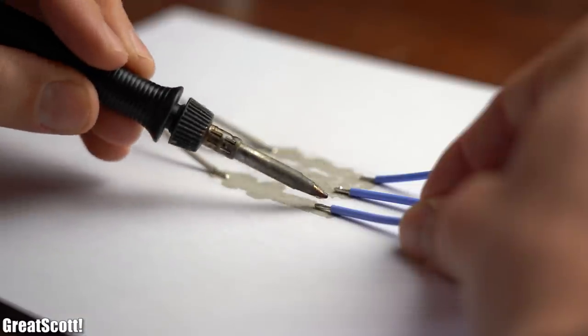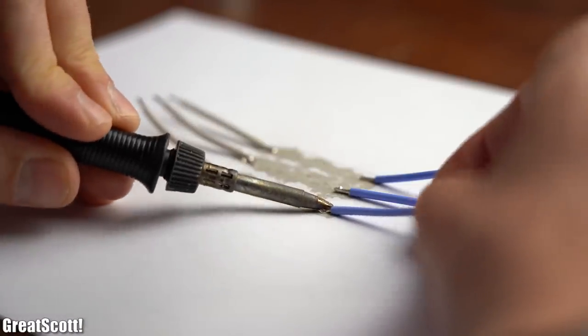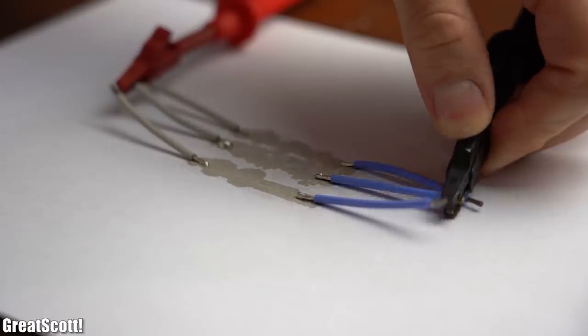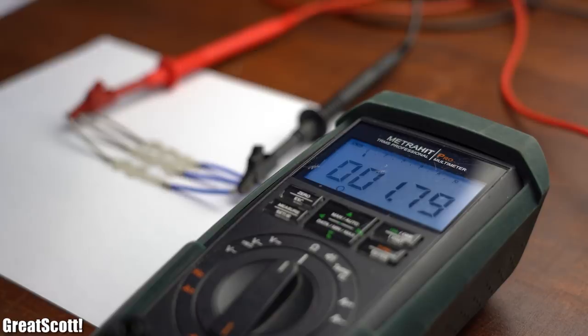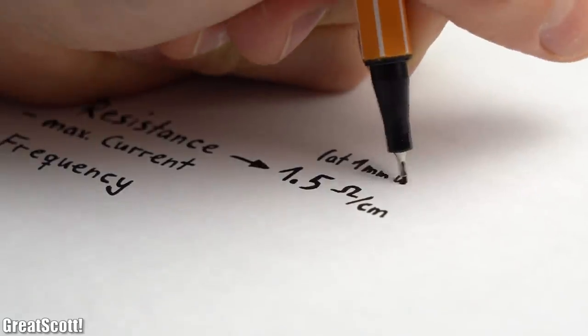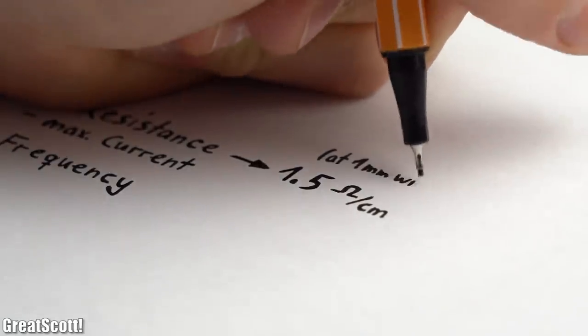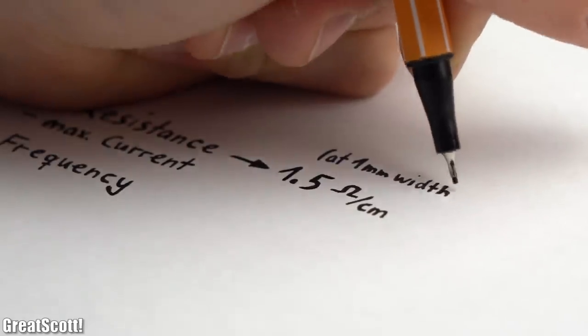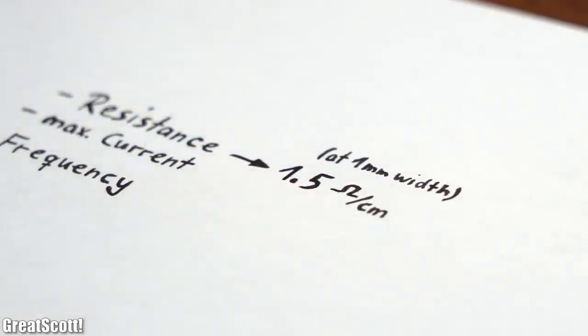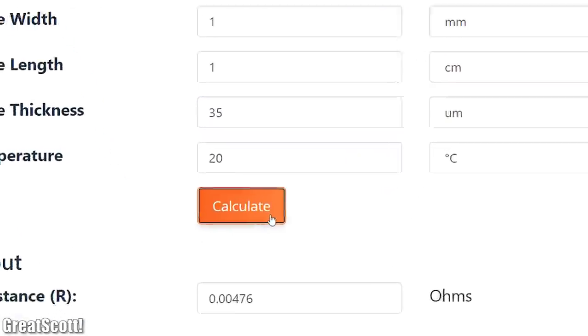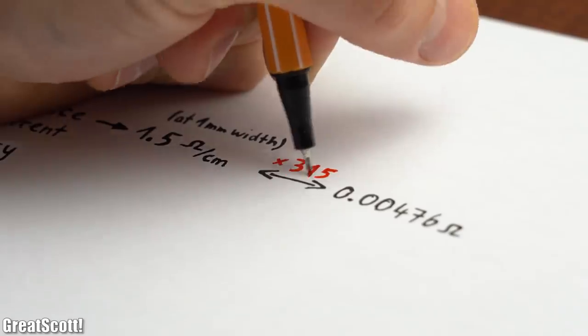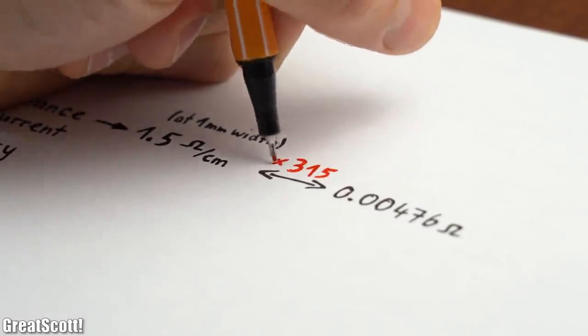So after letting everything dry I soldered wires to the end of all the lines and once again used my multimeter in order to measure the resistance. As it turns out the average resistance equals around 1.5 ohm per cm at a width of 1 mm. Which does not sound too bad but if you directly compare that to a PCB trace with the same width then you will see that the copper trace features a resistance that is around 350 times lower.